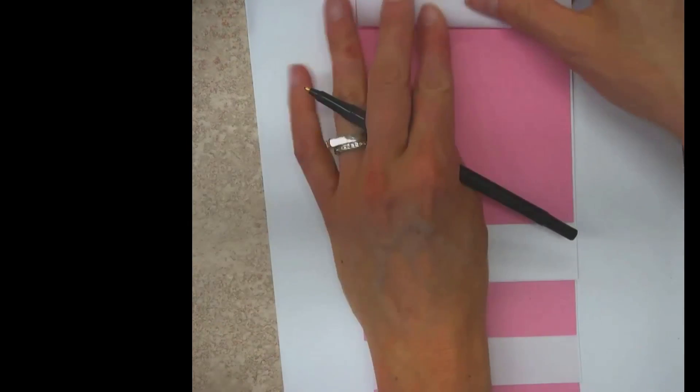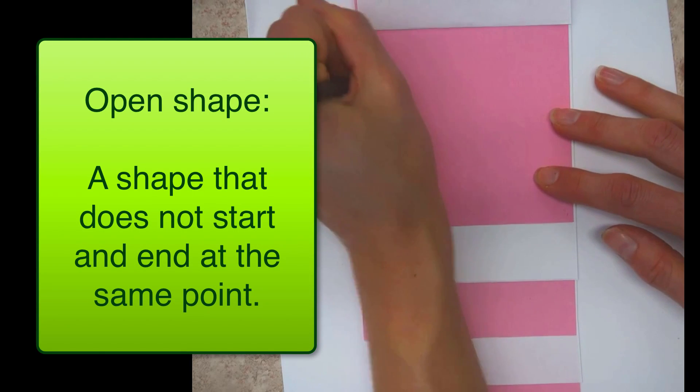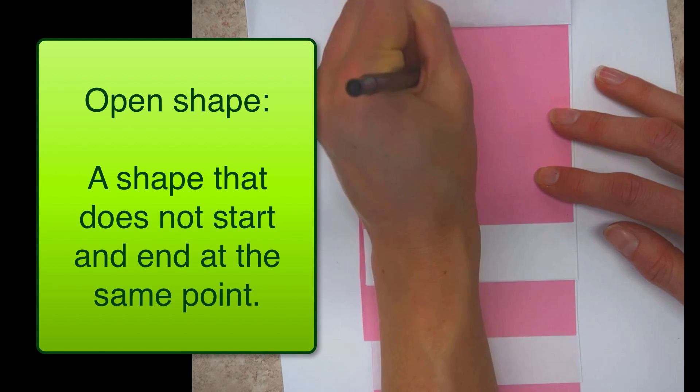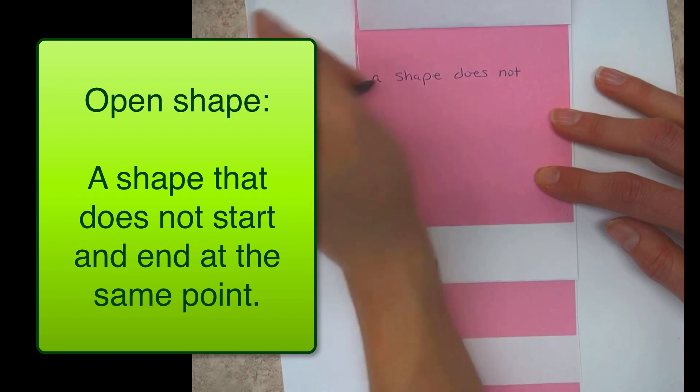So an open shape is a shape that does not start and end at the same point. So there's like a gap in it, almost.